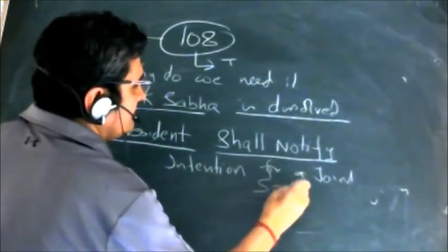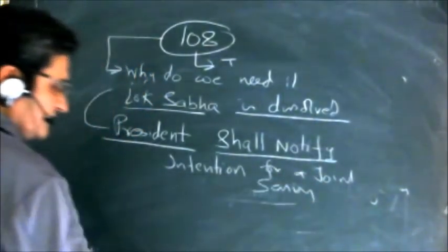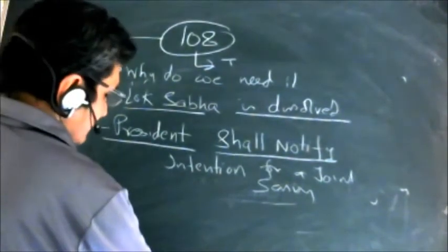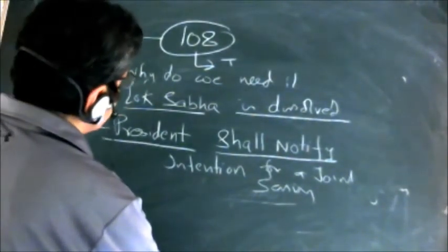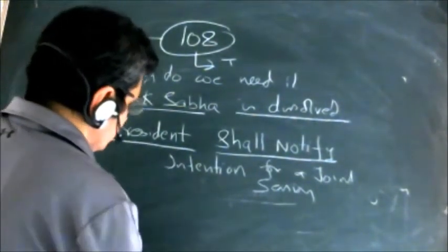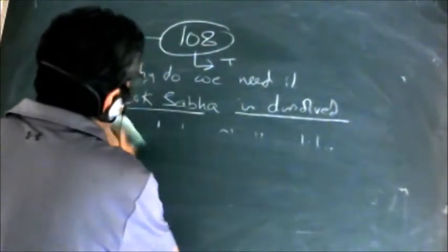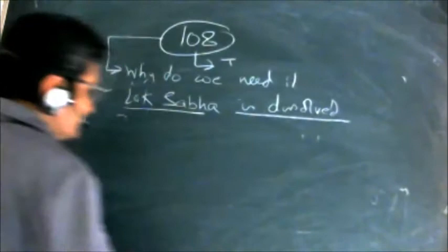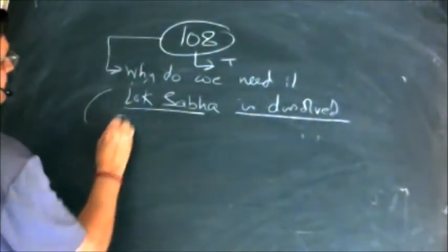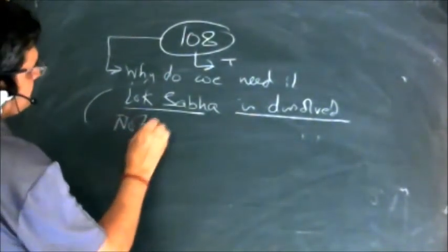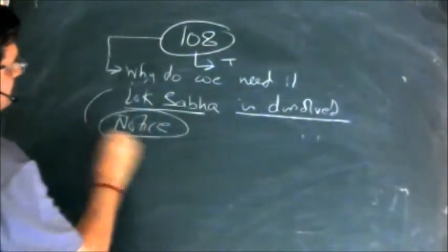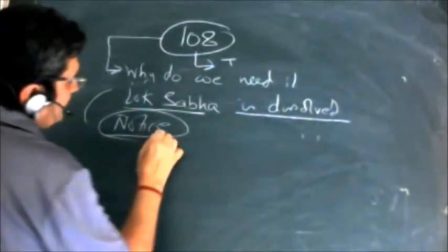And in case the houses are not sitting, then it will be a public notice kind of a thing that joint sitting will be held on this matter. Thereafter, after this notice, after this intention is made clear of joint sitting.